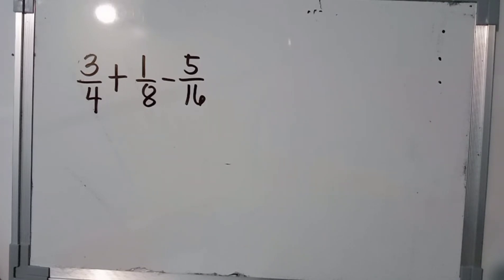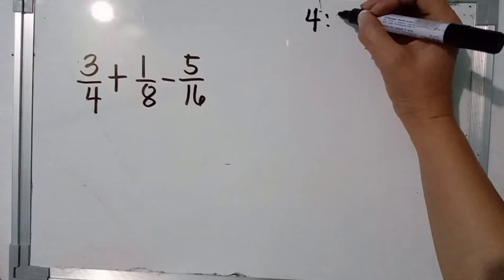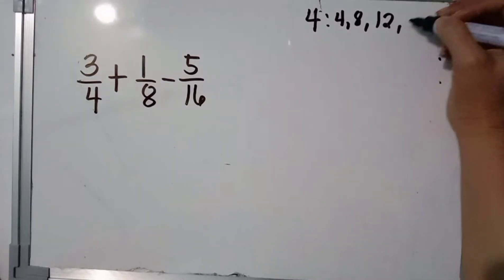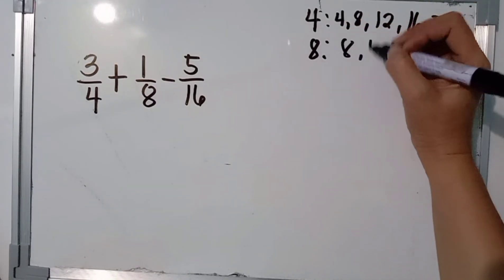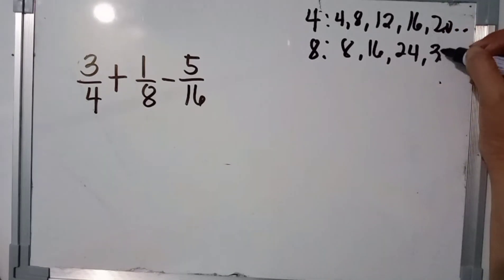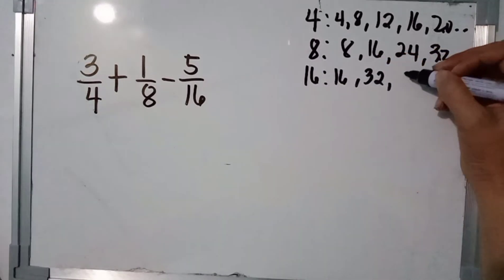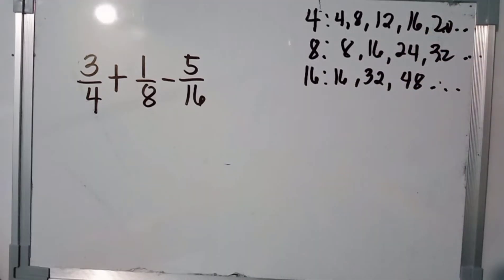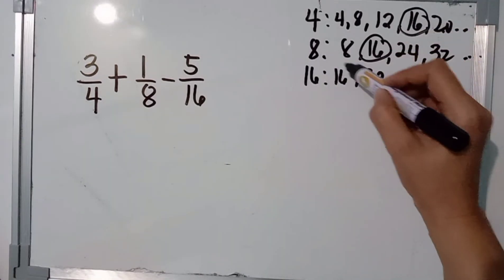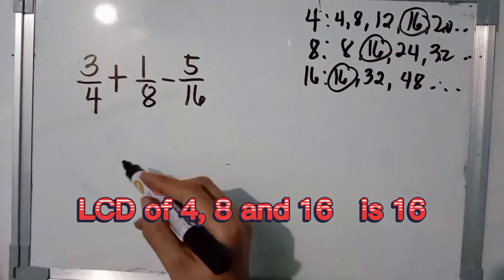Let's try the listing method to find the LCM of 4, 8, and 16. Multiples of 4: 4, 8, 12, 16, 20, and so on. Multiples of 8: 8, 16, 24, 32, and so on. Multiples of 16: 16, 32, 48, and so on. May napapansin tayong common na multiple sa kanila — yun ay 16. So, ang LCD ng 4, 8, at 16 ay 16.